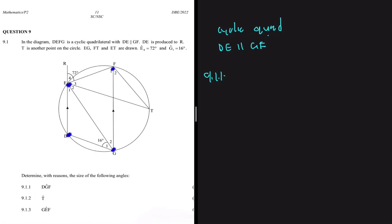So DGF - angle DGF is this angle right here. Let's go ahead and see if we can use the first keyword, which is cyclic quad. You'll realize real quick that angle DGF should be equal to this angle E4 that is situated here.